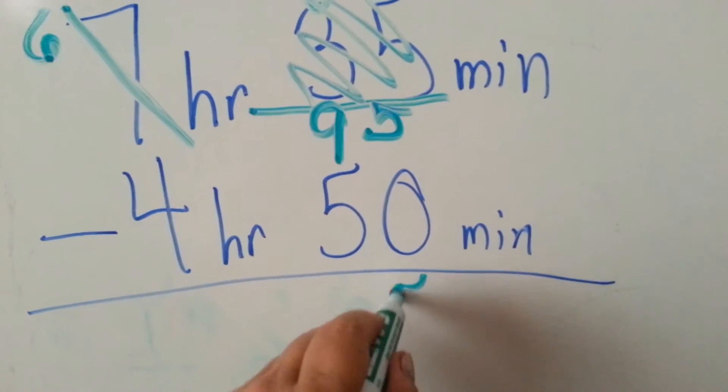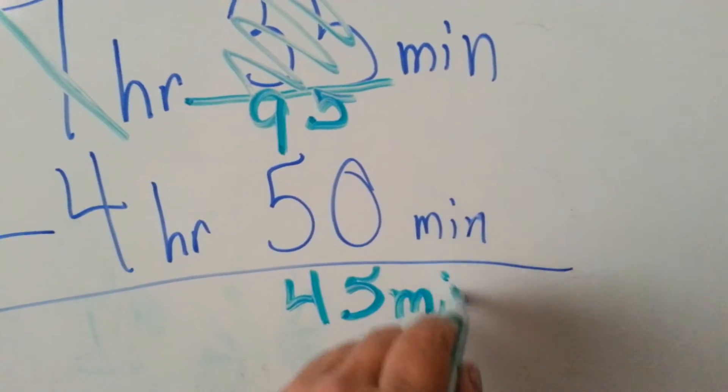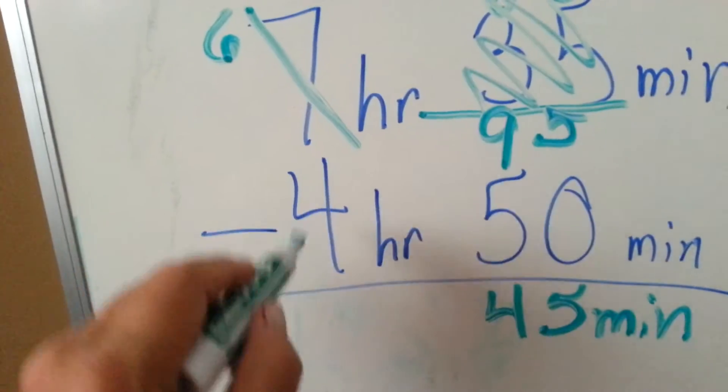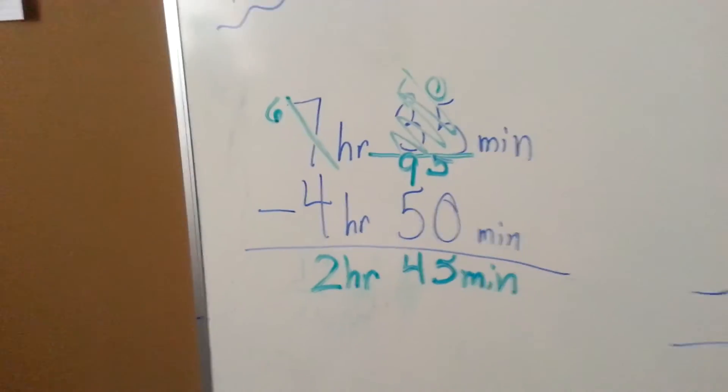5 take away 0 is 5, 9 take away 5 is 4. Always write your labels. 6 take away 4 is 2, and our answer is 2 hours 45 minutes.